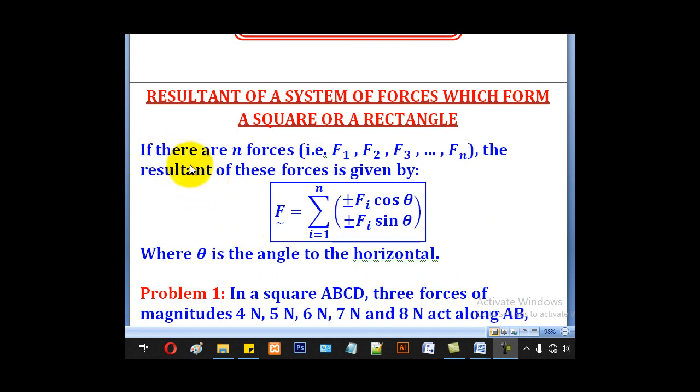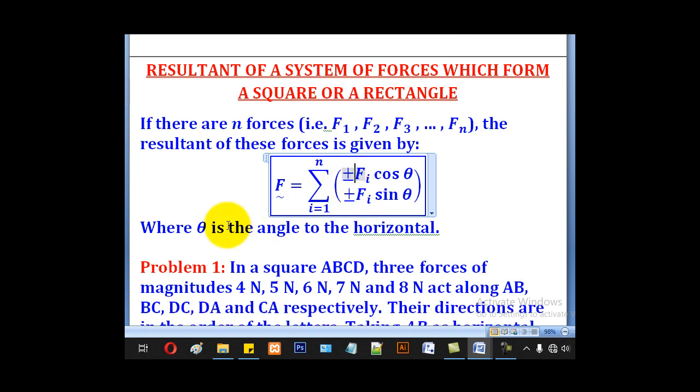Previously we saw that the resultant force of a given number of forces can be given by this formula: summation of i from 1 to n of Fi cos θ and Fi sin θ, all having plus or minus. We saw what this minus and positive mean, where θ is the angle to the horizontal.